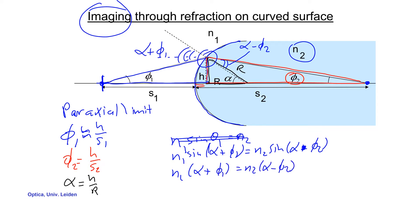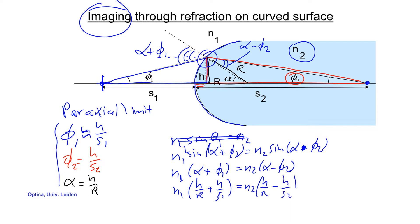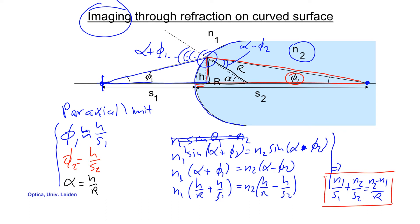Plugging in the angles, we get n1 times (h/r + h/s1) = n2 times (h/r − h/s2). Combining these terms yields the centerpiece of this lecture: n1/s1 + n2/s2 = (n2 − n1)/r. This is an expression I would like you to remember, because it is really important.